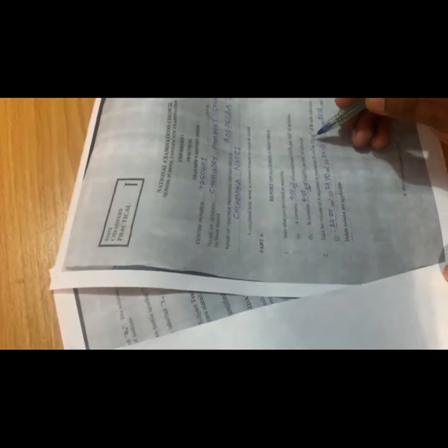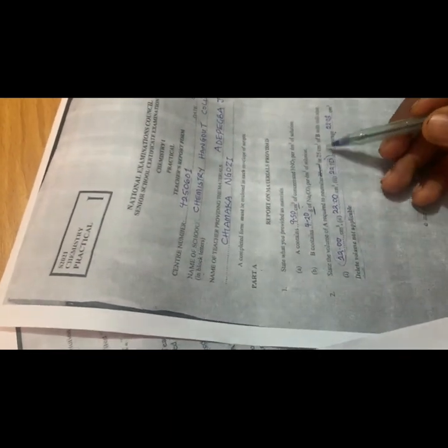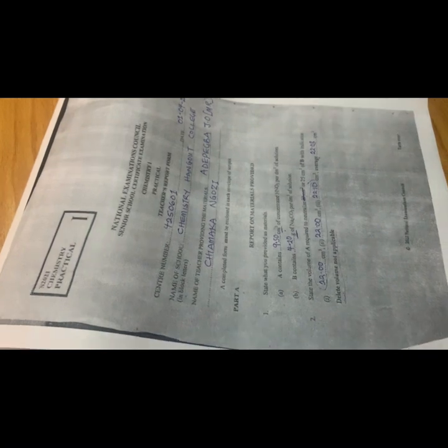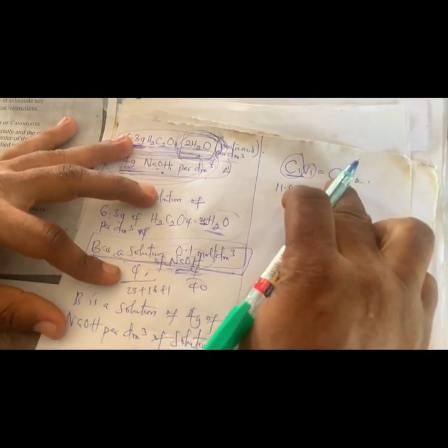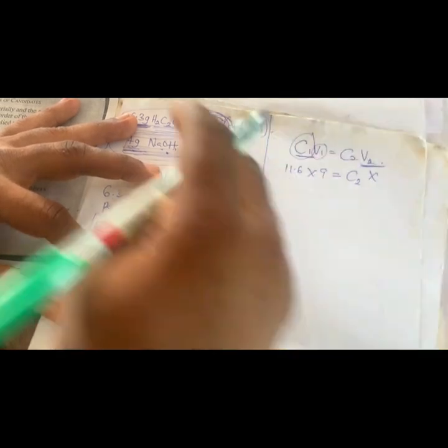I'm explaining how to fill the confidential reports using a confidential report given to schools. You can see how I'm filling it — deleting some volumes that are not needed, getting the average titre in the report as it's supposed to look. If you are given the volume of any acid, you can see the calculations here: how do you calculate it correctly? How do you use the dilution factor formula when you are preparing standard solutions? I'm doing them practically.